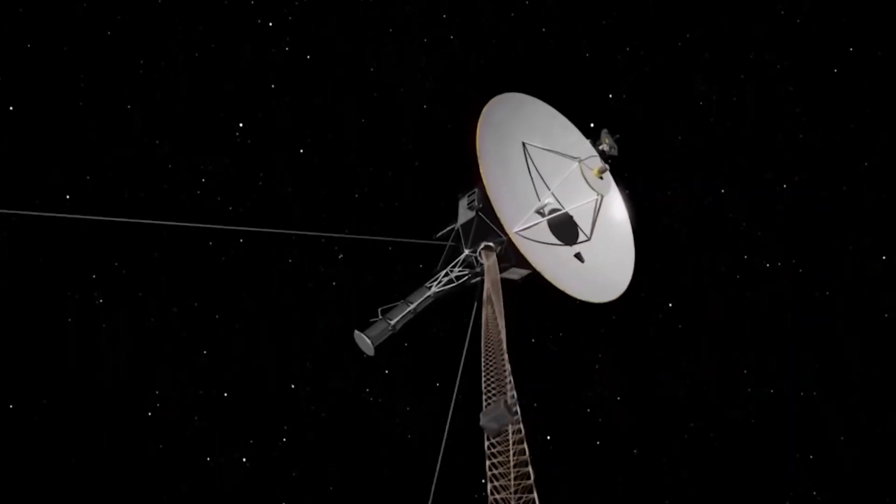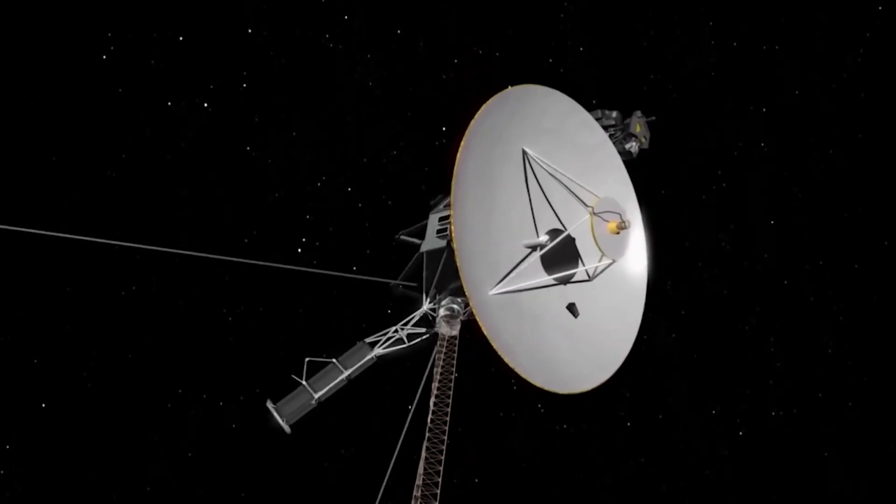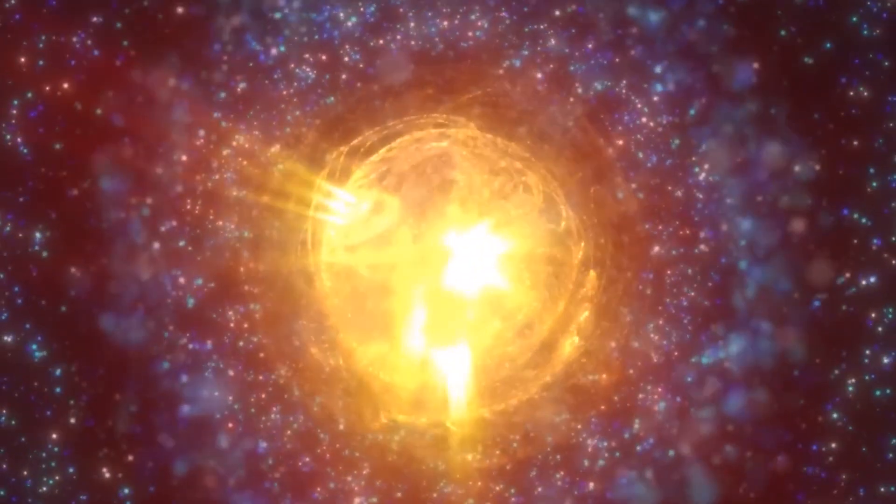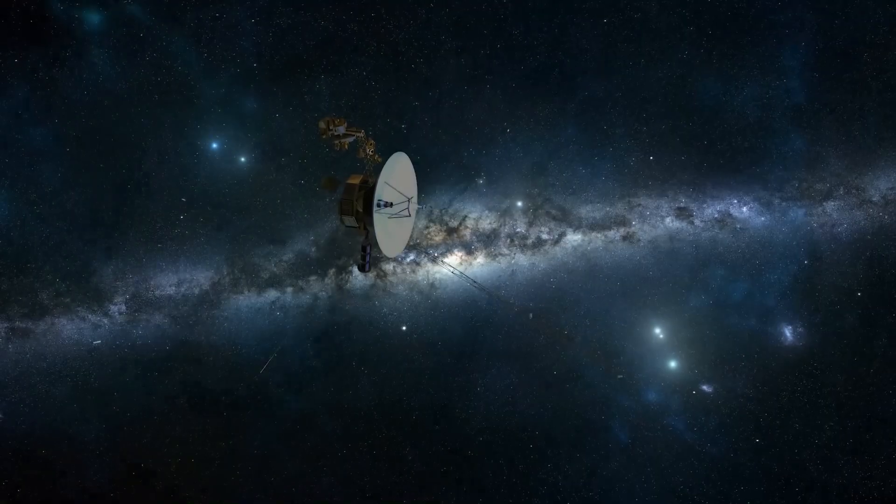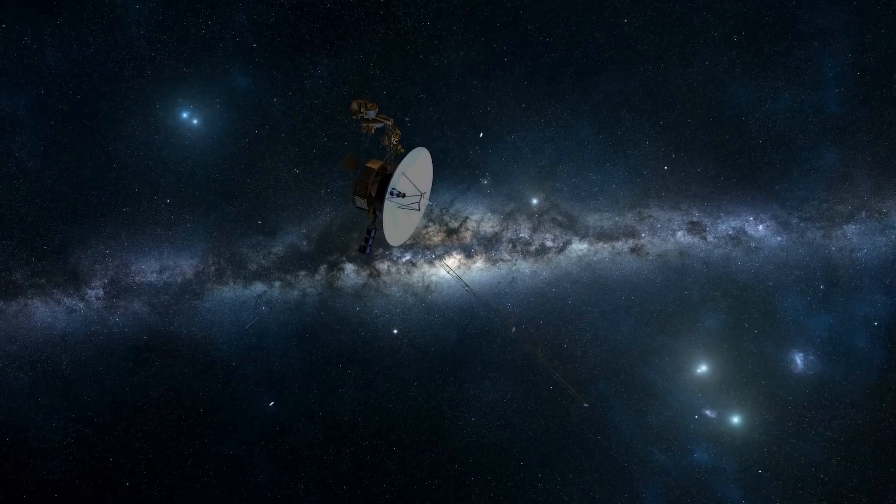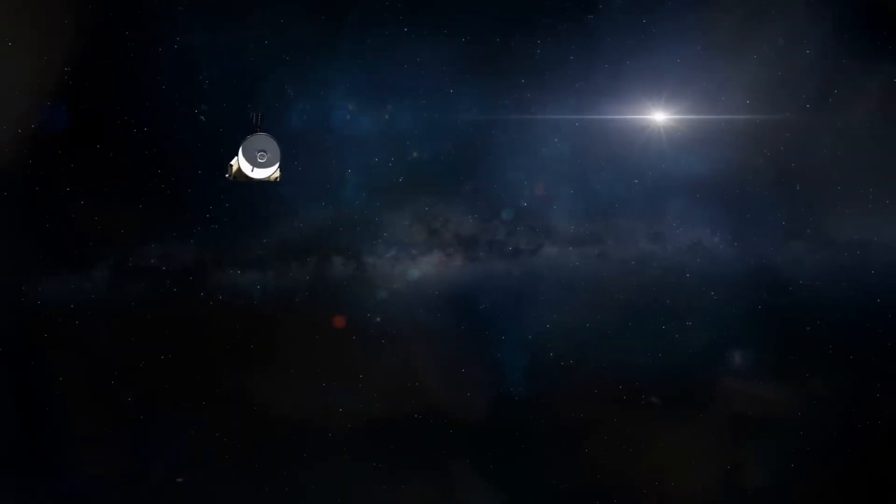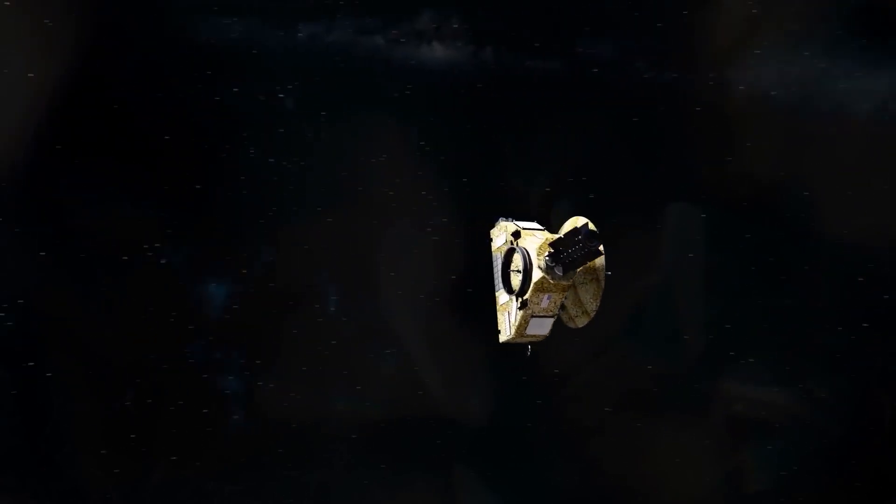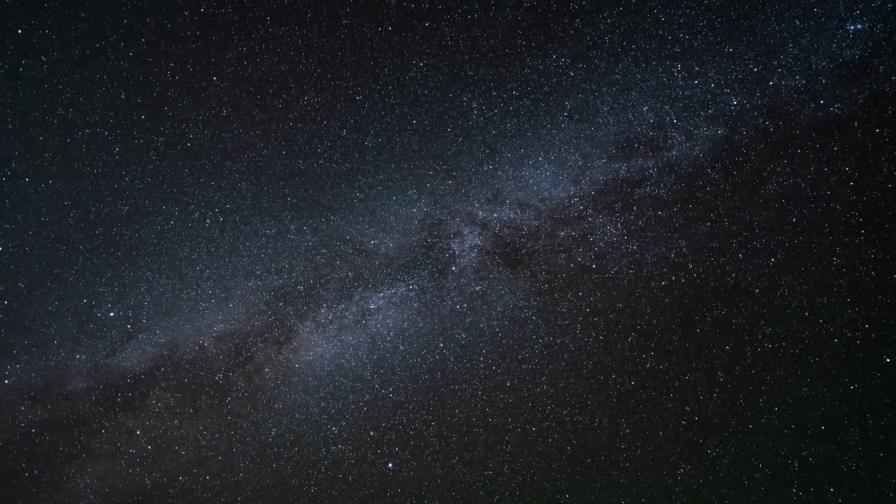Beyond our own solar system lies the enigmatic Oort Cloud, a vast congregation of comet-like objects held together by the sun's gravity and stretching to the nearest star. Although the Voyagers are still moving slowly towards that distant realm, their entry into interstellar space began when they crossed the heliopause, the boundary between our solar system and interstellar space.